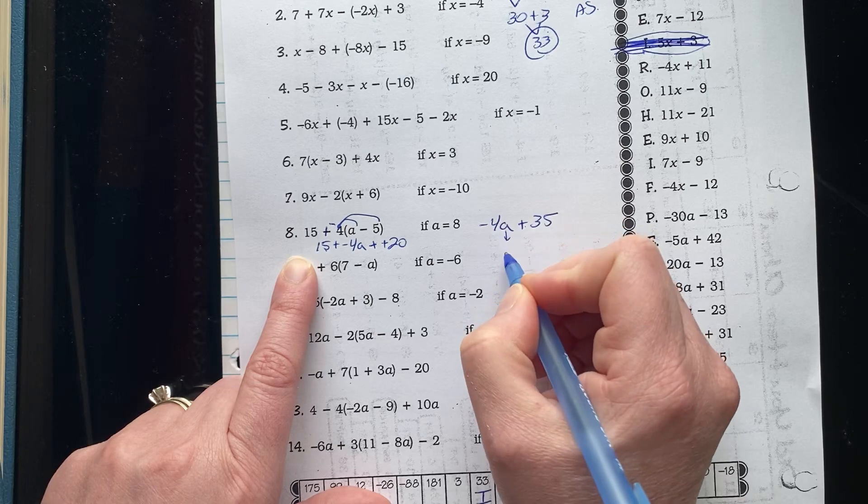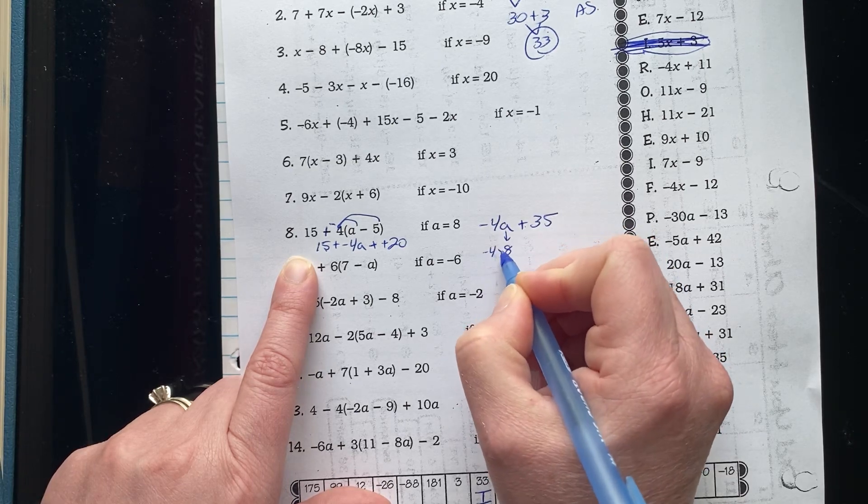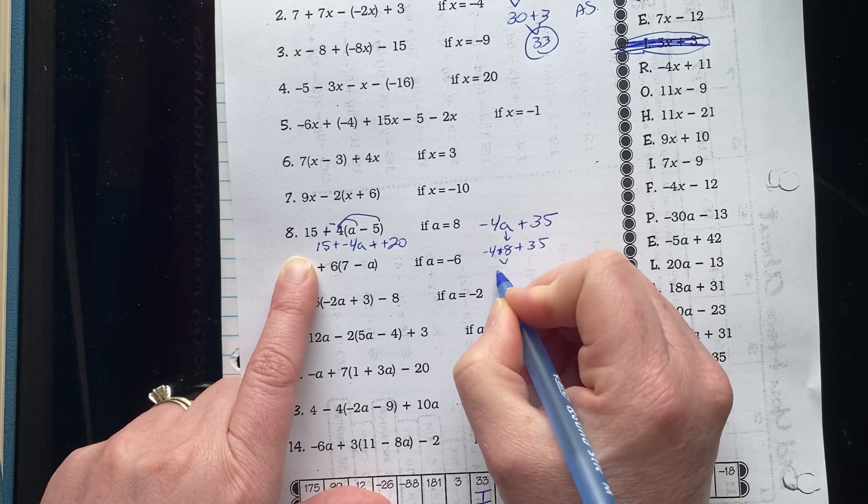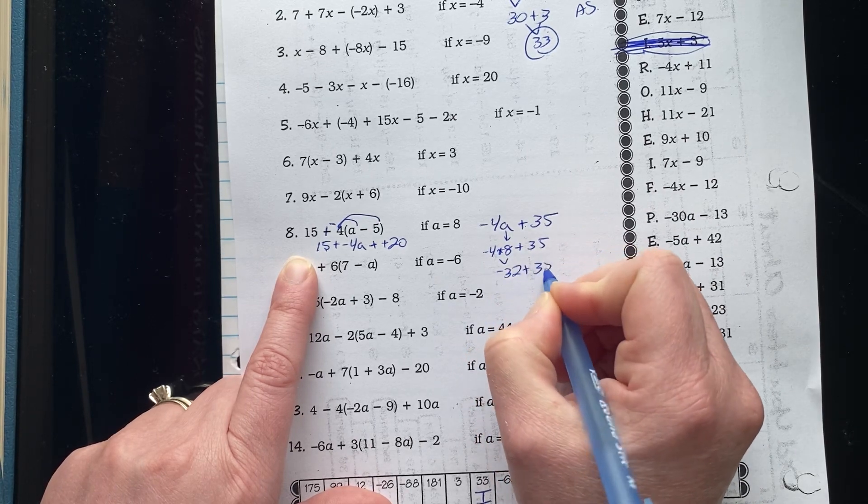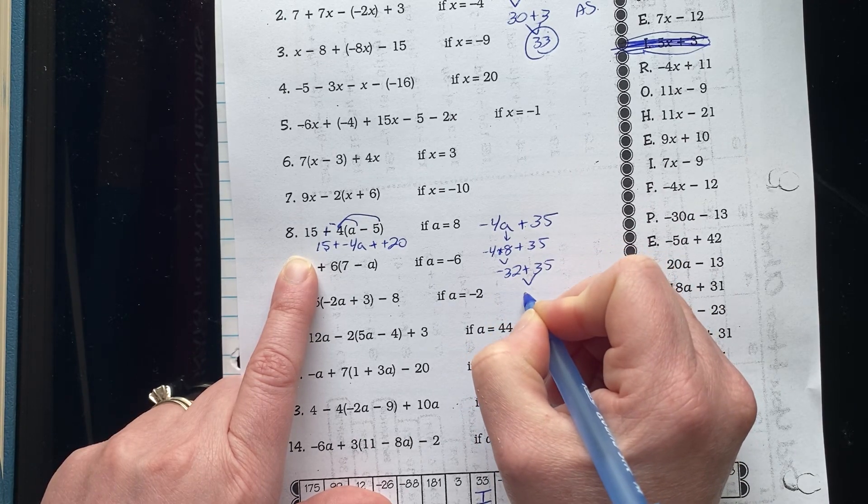I'm going to substitute in the value of 8. Negative 4 times 8 plus 35. Negative 32 plus 35. That's 3.